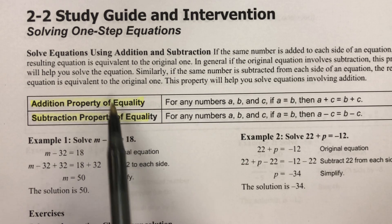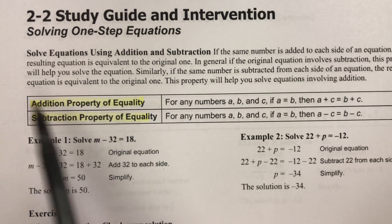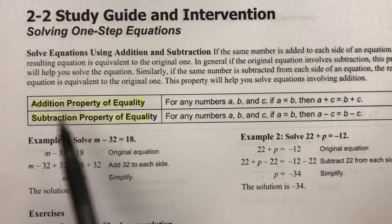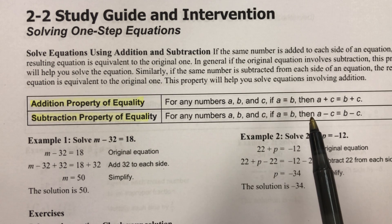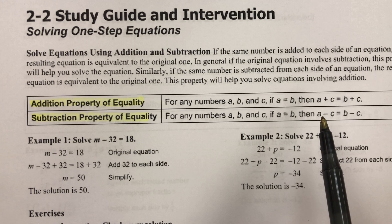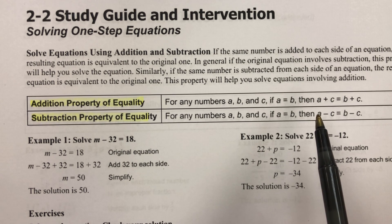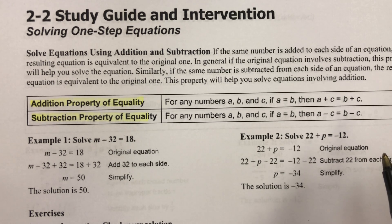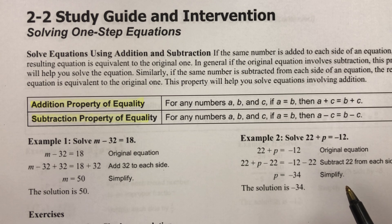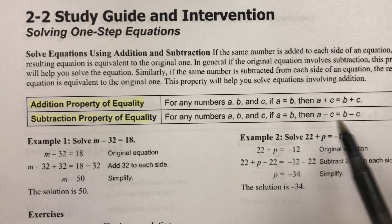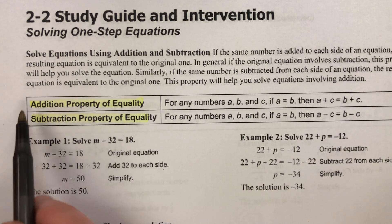Properties of equality are some properties you need to know for your assessment when we finish the chapter. The addition property of equality says that whatever I add on one side of an equal sign, I have to add the same thing on the other side to keep both sides equal. Just like the two sides of a scale — if you add an orange to one side, they're not equal anymore. But if you add the same exact thing to the other side, then they're still equal.